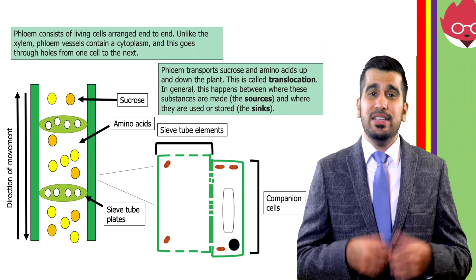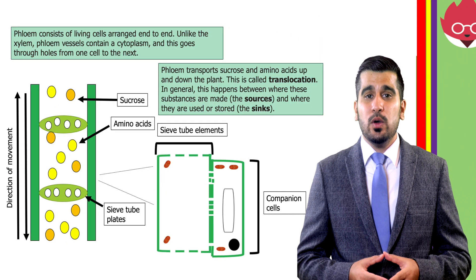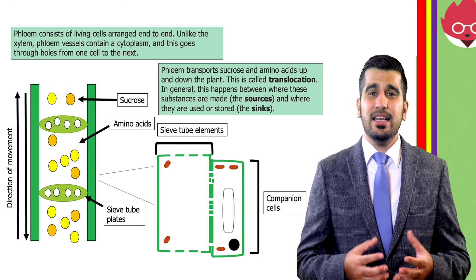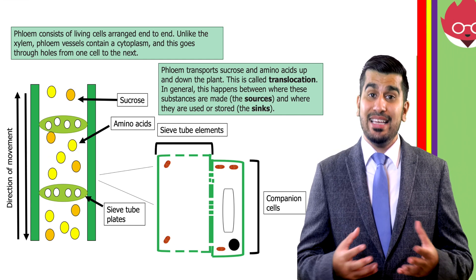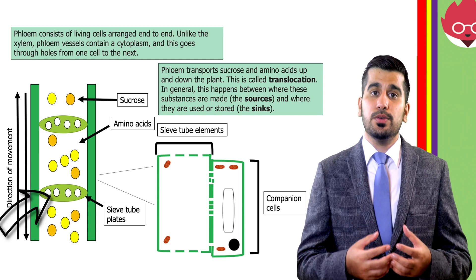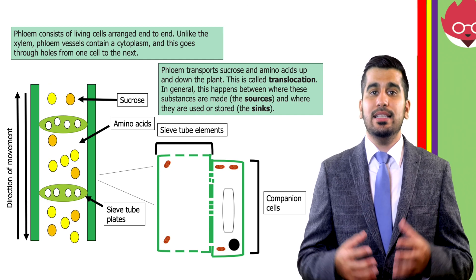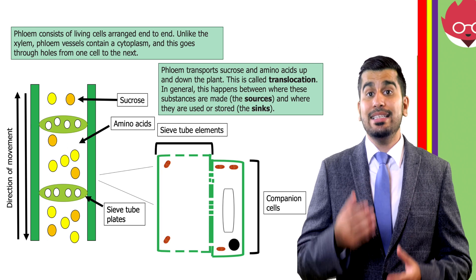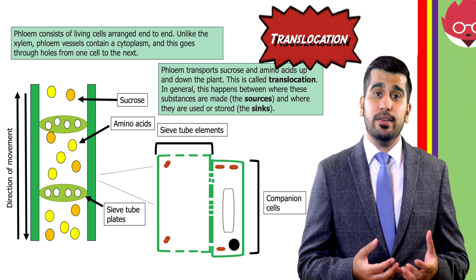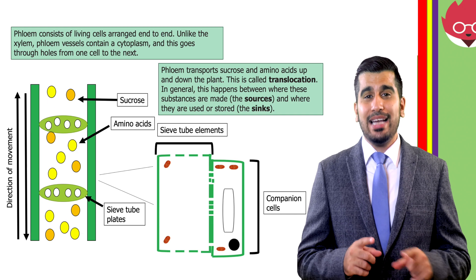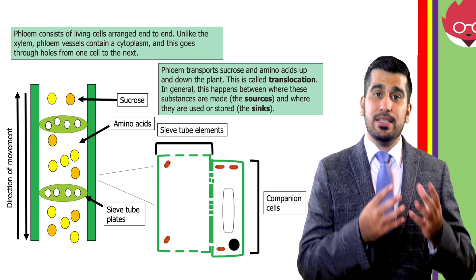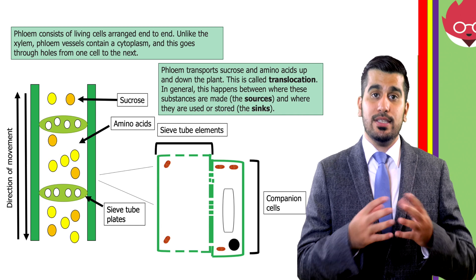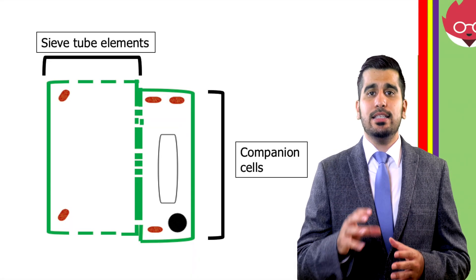Our next tissue is the phloem, which consists of living cells arranged end to end. Unlike the xylem, the phloem vessels contain a cytoplasm, and this goes through holes from one cell to the next. The phloem transports sucrose and amino acids up and down the plant. This is called translocation. In general, this movement happens between where these substances are made — the source — and where these substances are stored — the sinks.